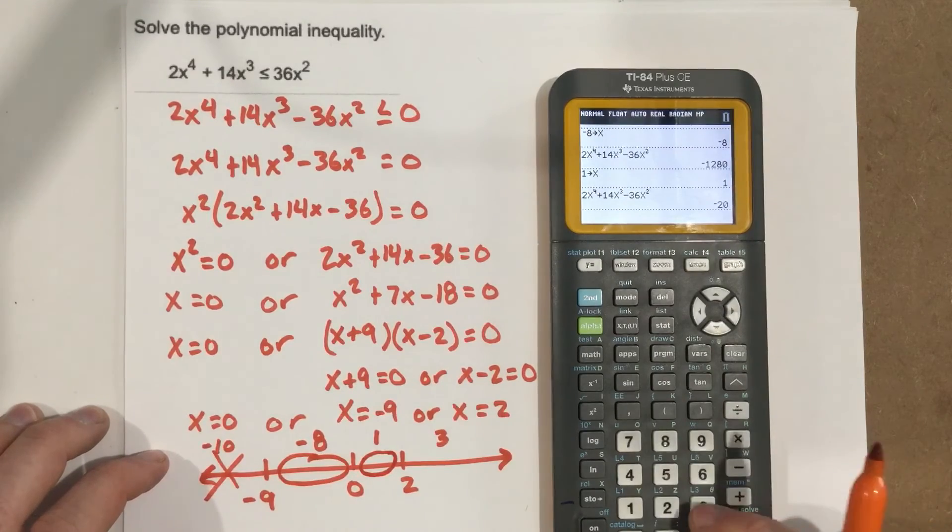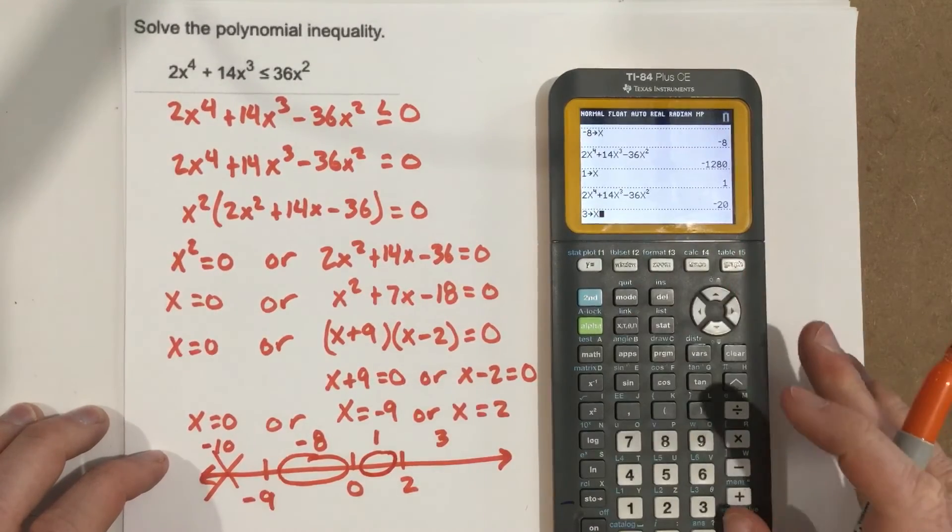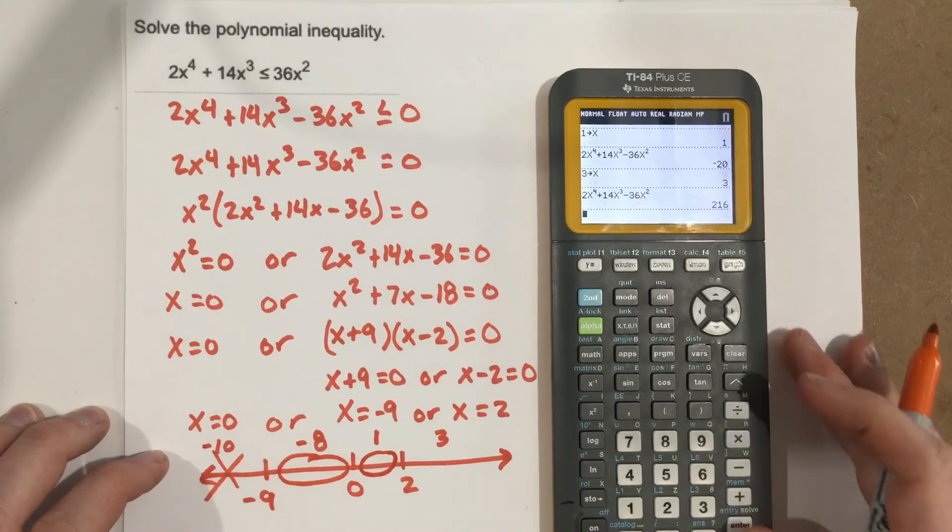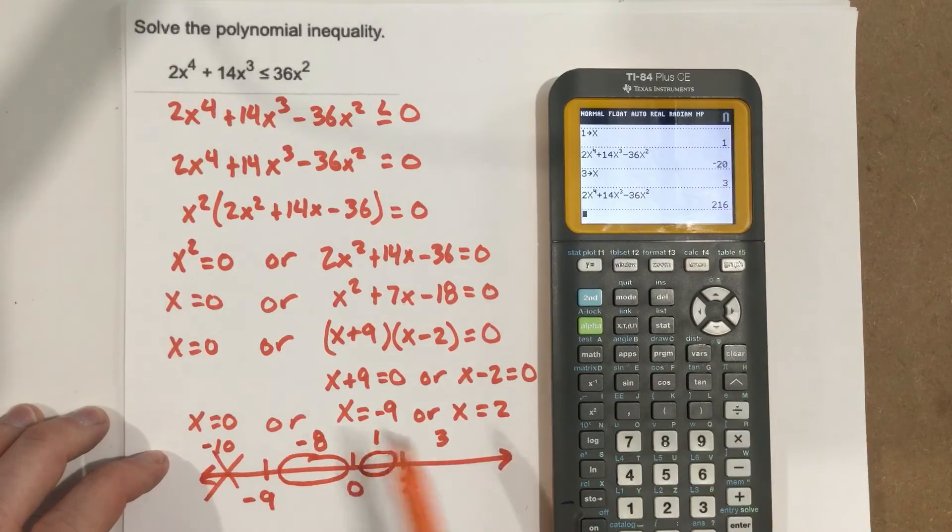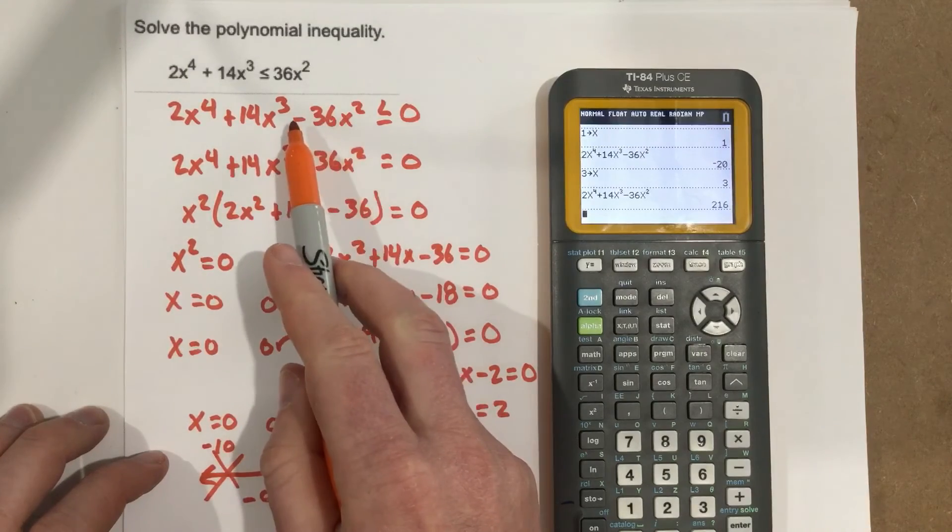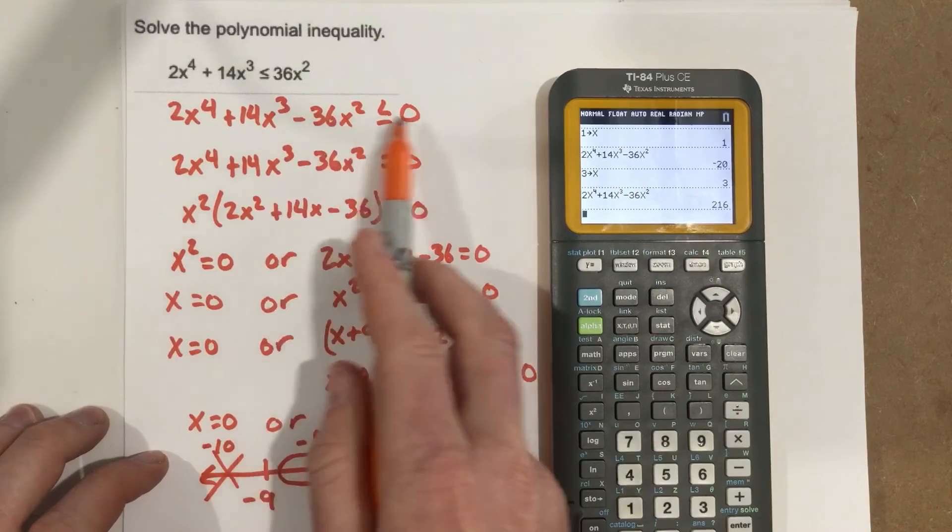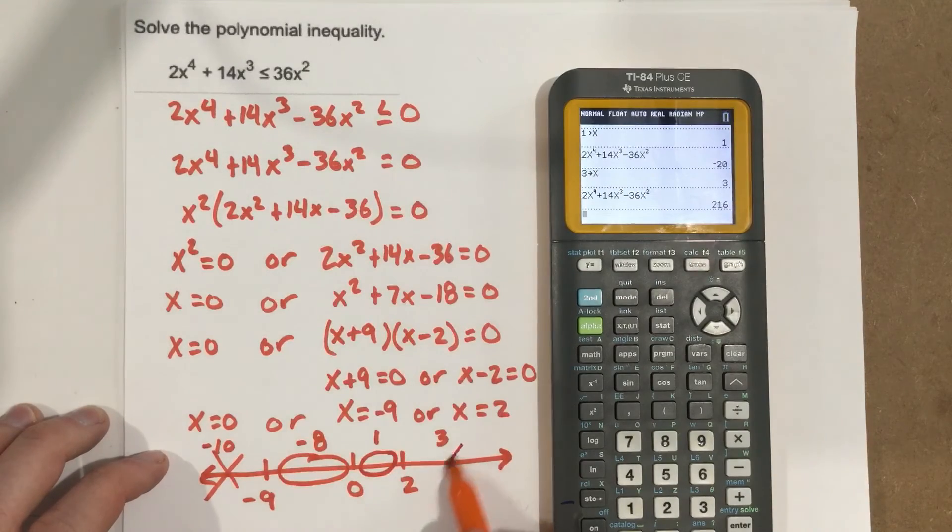Finally, I take 3 and store it as x. Grab that function for the last time. 216. That's bigger. It would say 216 less than or equal to 0. So that's much larger than 0. So that doesn't work. So these do not work here.